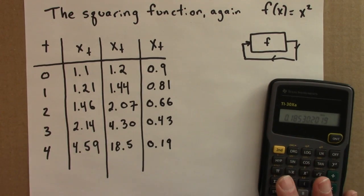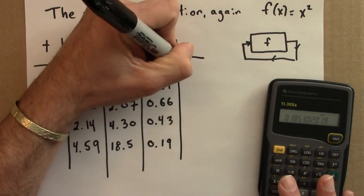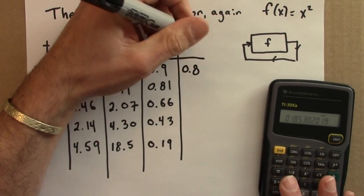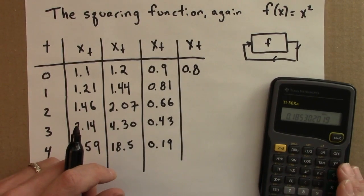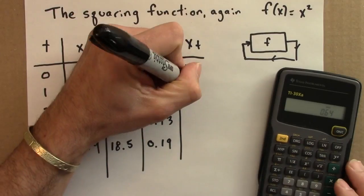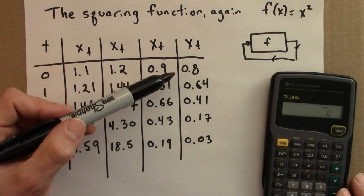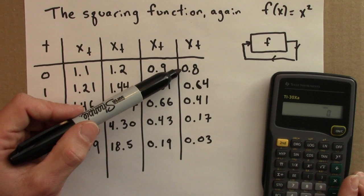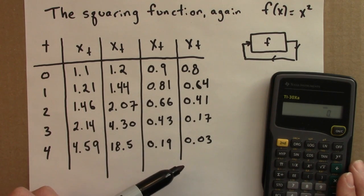Let's try one more initial condition, one more seed. I'll try 0.8. And I'll square again and again to get the orbit. So again, when we square a number that's between 0 and 1, it gets smaller. Here we can see the numbers getting closer and closer to 0.